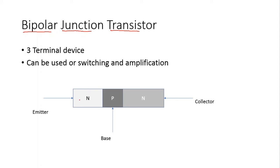This is our bipolar junction transistor — this is our NPN transistor. We have an emitter over here, we have a base over here, and then we have a collector over here. We have two junctions: this is J1 and this is another PN junction which is J2. Because we have junctions here, that is why it is called a junction transistor.